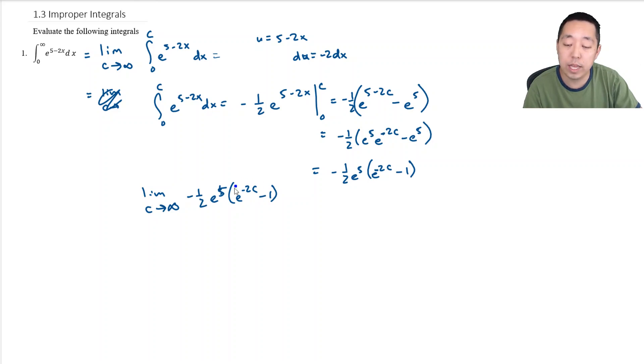We're going to say, exponentials e to a negative giant big number is going to be 0, because this is like 1 over e to the 2c. e to a big number is going to be a big number. 1 over a big number is really small, 0. So then this is going to be negative 1 half e to the 5th, 0 minus 1. That's negative 1 times this is 1 half e to the 5th.